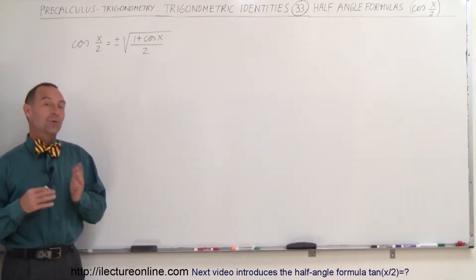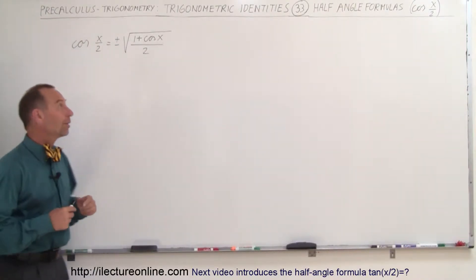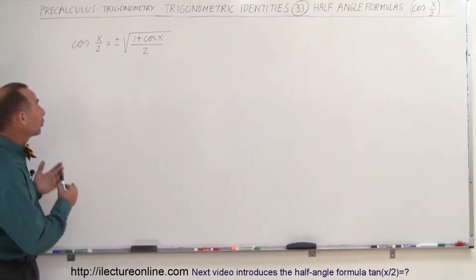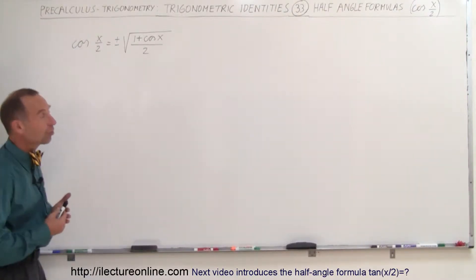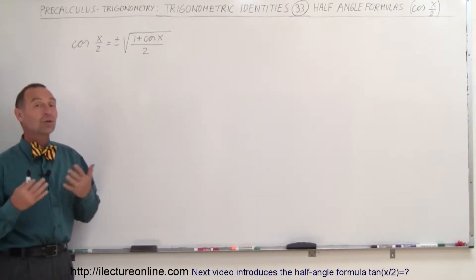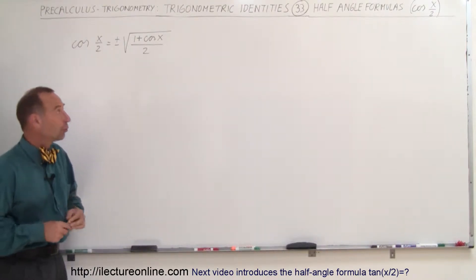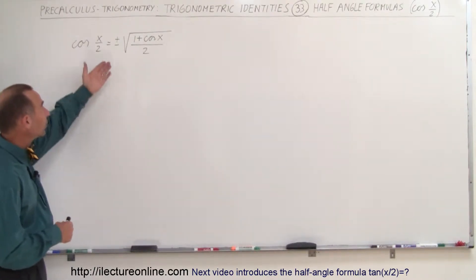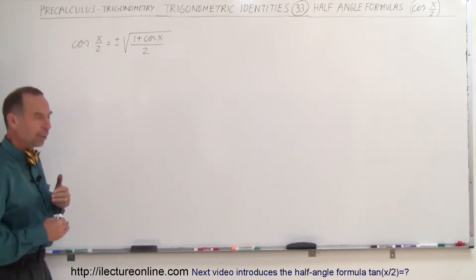Welcome to ElectronLine. Now we're going to show you where the half angle for the cosine function came from. What is the cosine of x over 2 equal to? Well, it's equal to this.